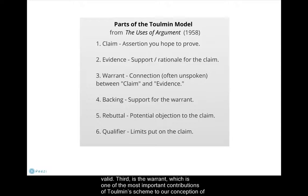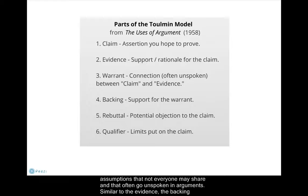Third is the warrant, which is one of the most important contributions of Tullman's scheme to our conception of argumentation. The warrant helps us draw connections between the claim and the evidence, and identifies assumptions that not everyone may share and that often go unspoken in arguments. Similar to the evidence, the backing provides support for the warrant — it tells us why our warrant is a rational assumption.